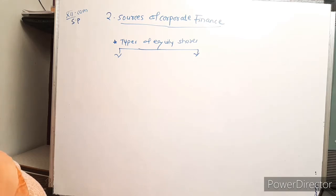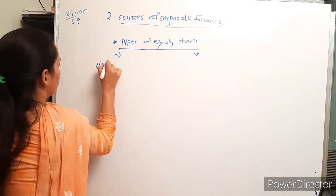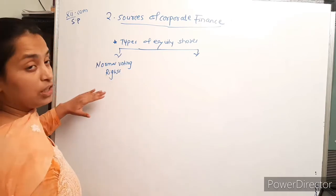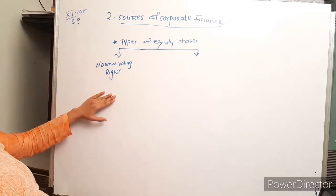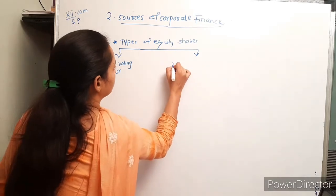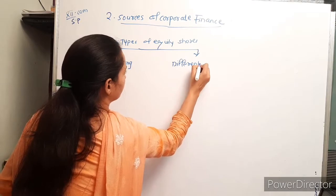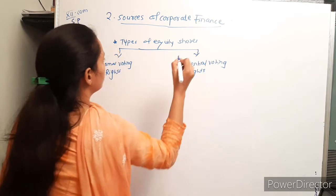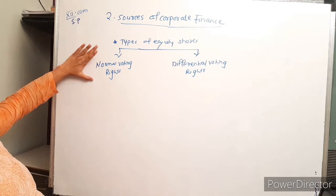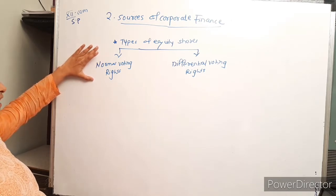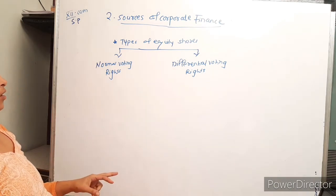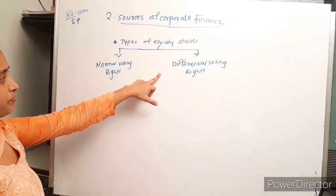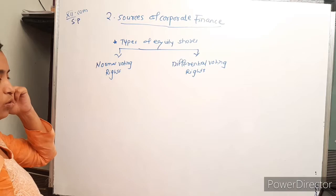The first category is equity shares with normal voting rights, and the second category is equity shares with differential voting rights.